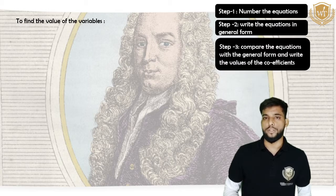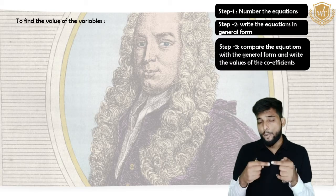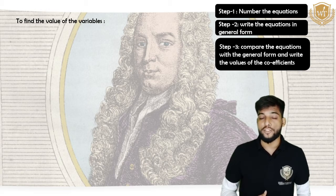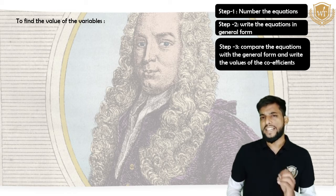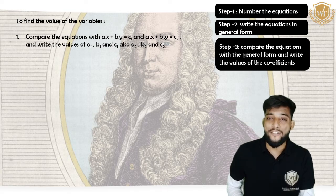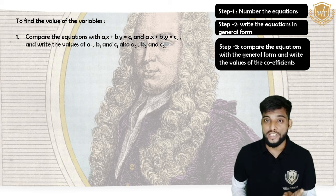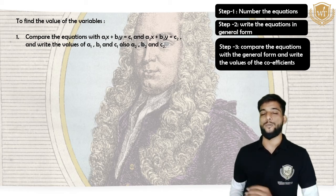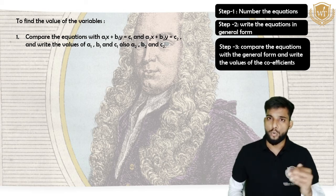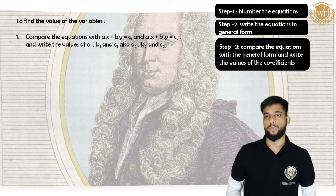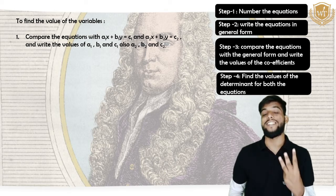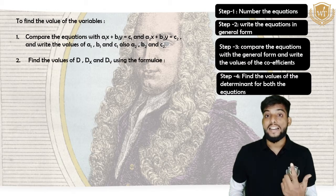Step number three is very important — we are going to compare both the given equations with the general equations to get the values of the coefficients and the constant. The first equation will be compared with A1X plus B1Y equals to C1, giving us A1, B1, C1. The second equation will be compared with A2X plus B2Y equals to C2, giving us A2, B2, C2.